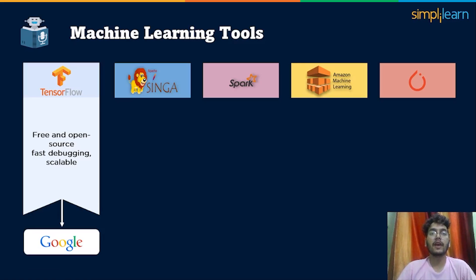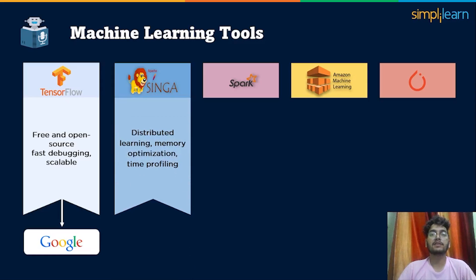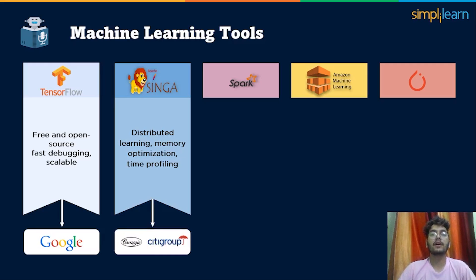Next we have Apache Singa, an Apache top-level project used for developing an open-source machine learning library. Key features of Apache Singa include distributive learning, memory optimization, time profiling, and many more. Apache Singa is currently in use at Carnius Technologies, Citigroup, and many others.